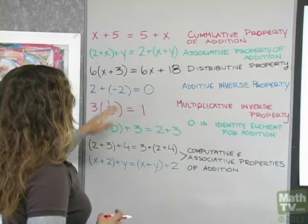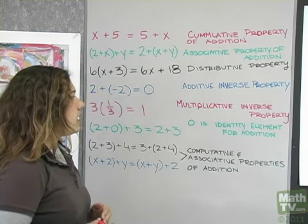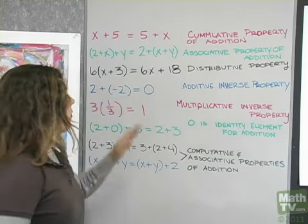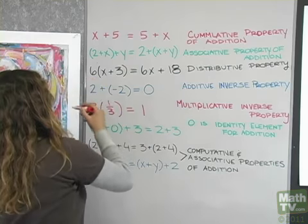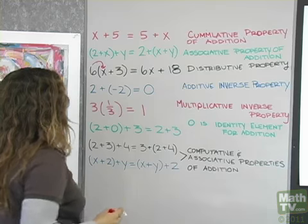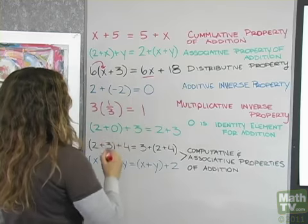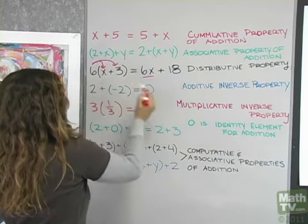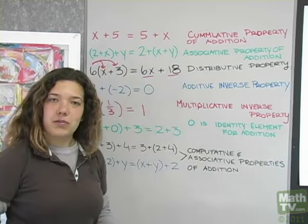6 times the quantity x plus 3 equals 6x plus 18. That's the distributive property. If you were to multiply 6 times x plus 3, well 6 times x is 6x and 6 times 3 is 18. So 6x plus 18.